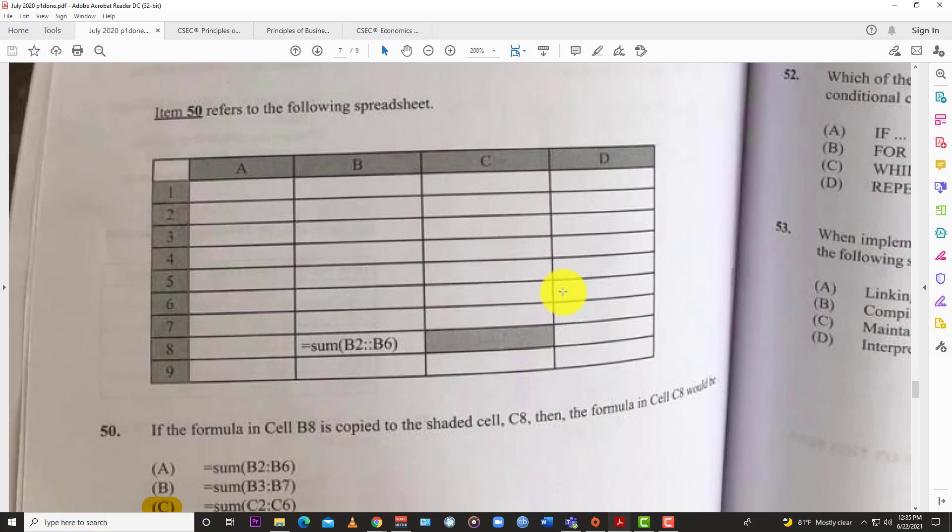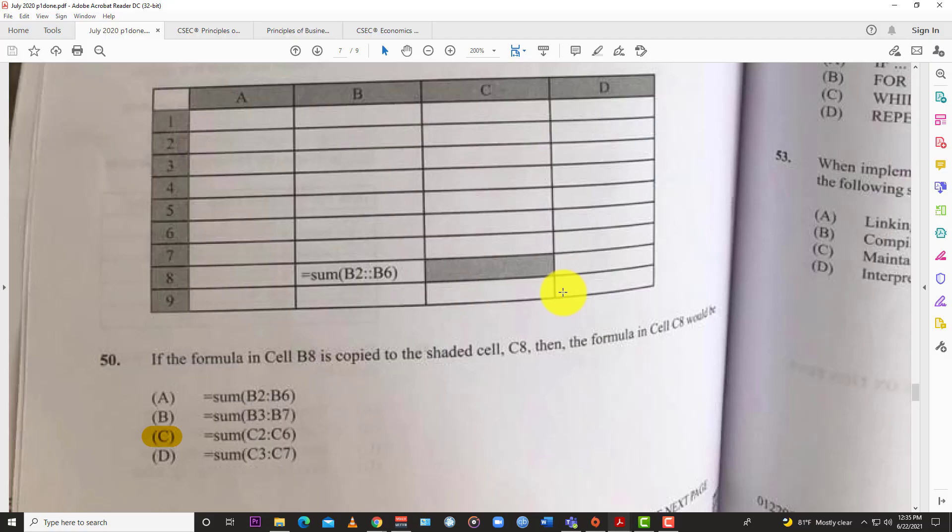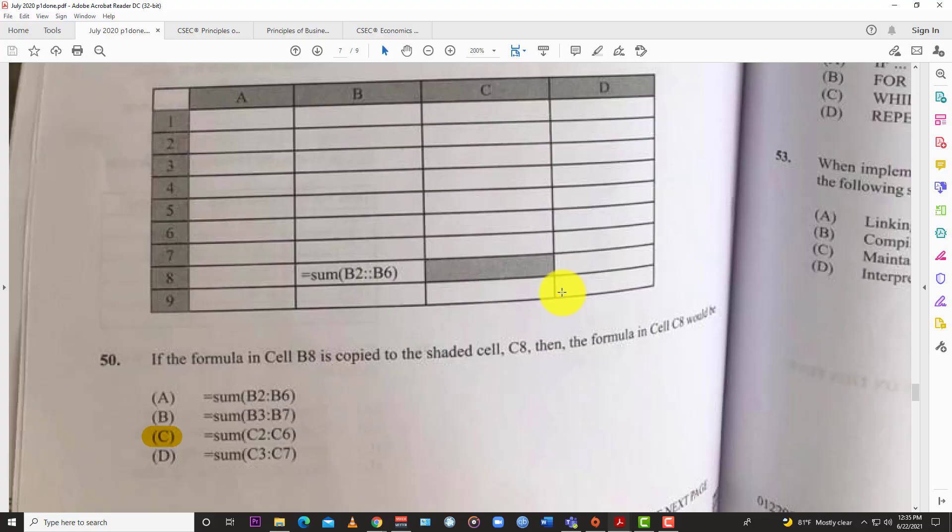Question 50: If the formula in cell B8, which equals sum B2 to B6, is copied to the shaded cell C8, then the information in C8 would be C, equals sum C2 to C6. Because it's the next one to the left, so it's A, B. You're going to the next one to the left, so it differentiates. Very simple actually.